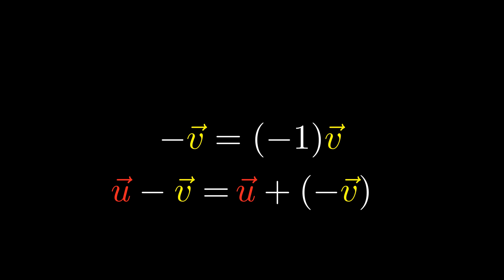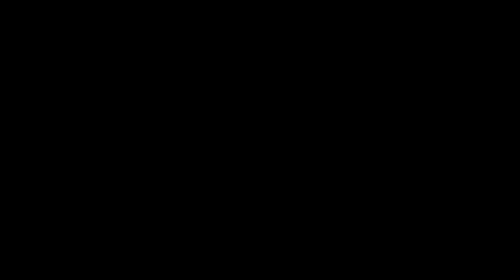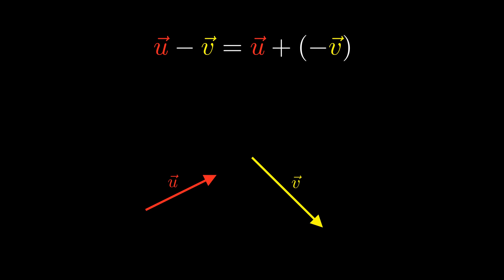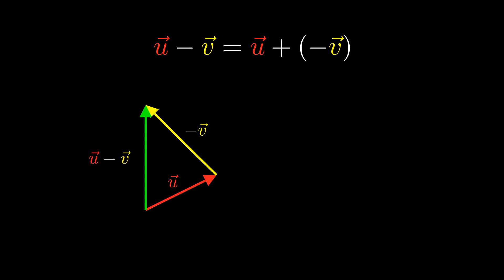But what do these operations look like geometrically? Let's start with the negative of a vector. The negative of a vector is negative 1 times that vector — geometrically, we find it by flipping the vector around. So what does subtraction look like? Here are two vectors. Subtracting two vectors is the same as adding the negative of the second to the first. Thus, we flip the second vector and place it at the end of the first vector; then this vector is their difference.